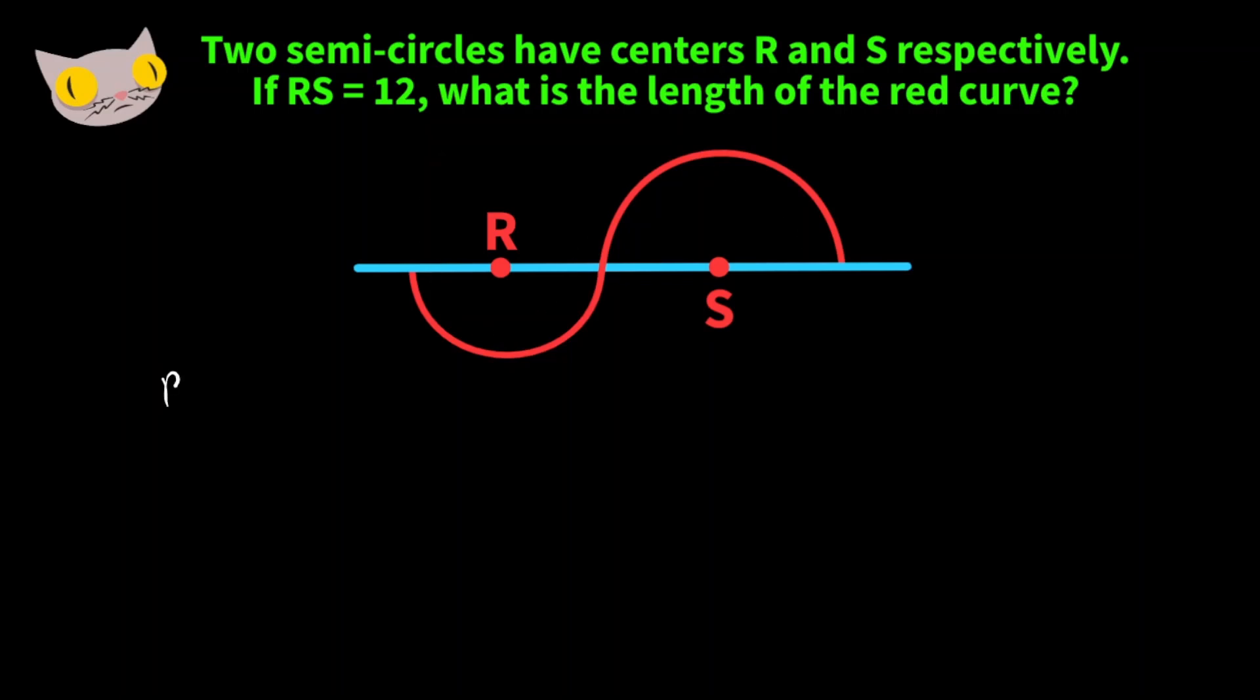So we know RS is going to equal R plus S, which means that R plus S is equal to 12.